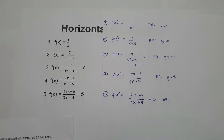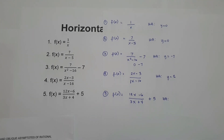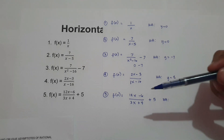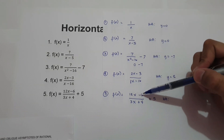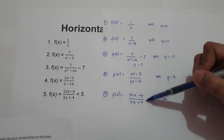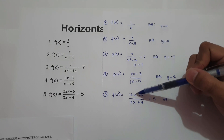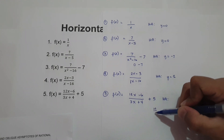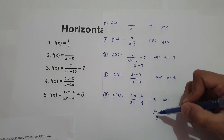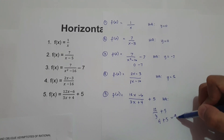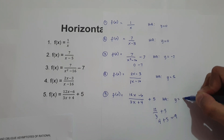How about number five? Go ahead and find the horizontal asymptote for number five. Number five: f of x equals 12x minus 6 all over 3x plus 4, plus 5. This falls on case number two because the degree of the numerator and the denominator are equal. Therefore, we have 12 divided by 3, plus 5. 12 divided by 3 is 4, plus 5 — our horizontal asymptote is 9.